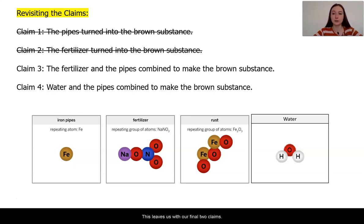This leaves us with our final two claims that two types of things reacted: either the fertilizer and the pipes, or the water and the pipes. Now based on the atoms that we see here, both would be possible. There are oxygen atoms and iron atoms if this reaction took place, and iron pipes and water I see an oxygen and iron that could rearrange in some way.